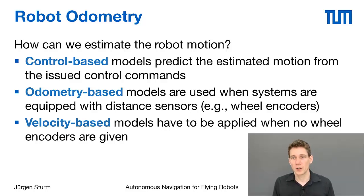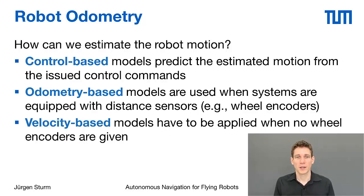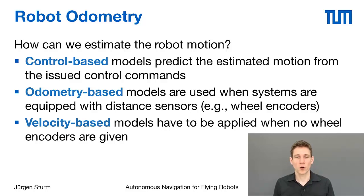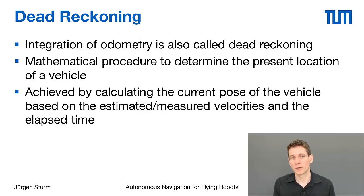Another option is to use odometry sensors like wheel encoders. For wheeled robots, wheel encoders count the number of wheel spins of the motor or wheel, and from that we can derive the robot's motion. A further option is to use a velocity sensor, such as the AR drone's downlooking camera, which gives the current velocity of the robot. By integrating velocities over time we can determine robot motion over a time interval. This process is called dead reckoning — determining the present location of a vehicle from its odometry readings.